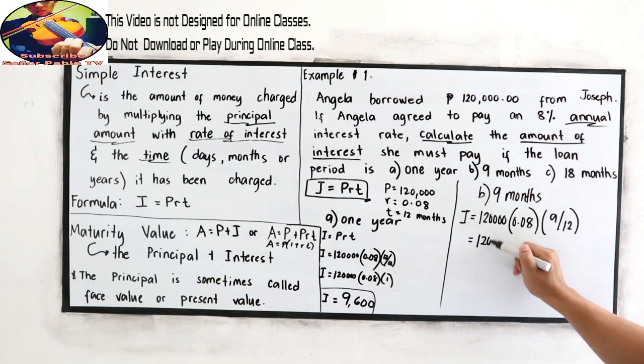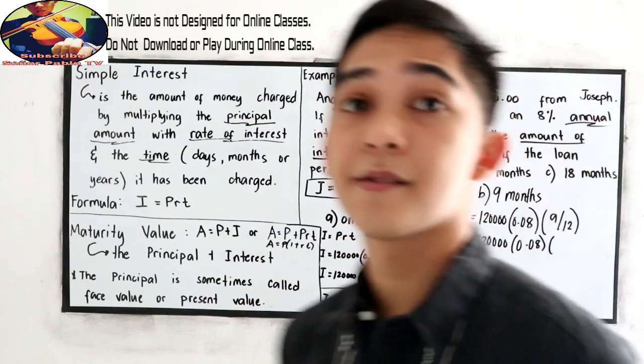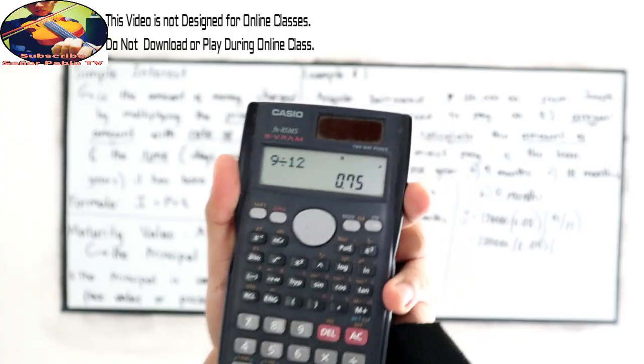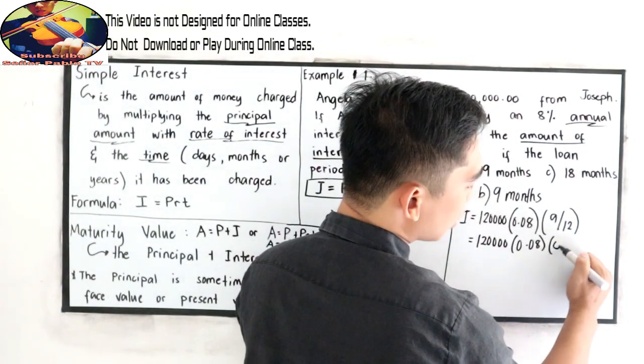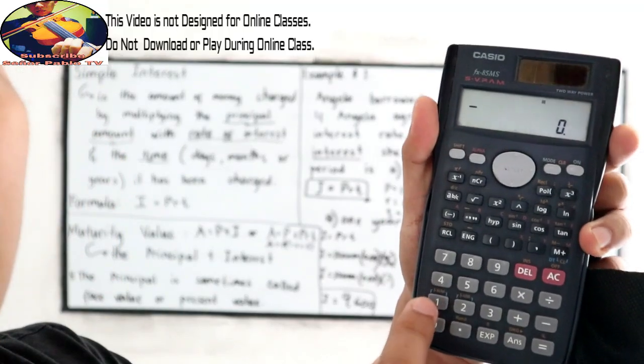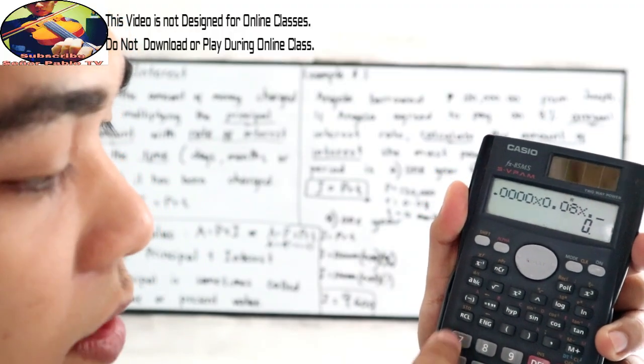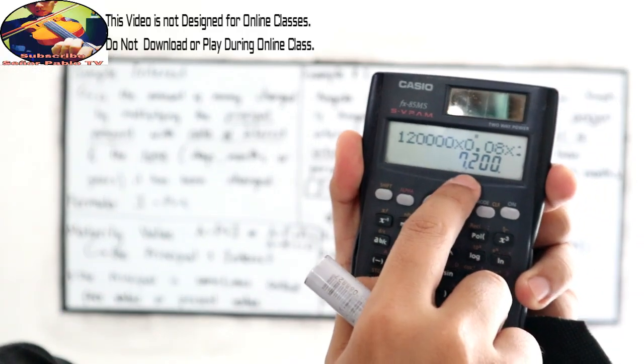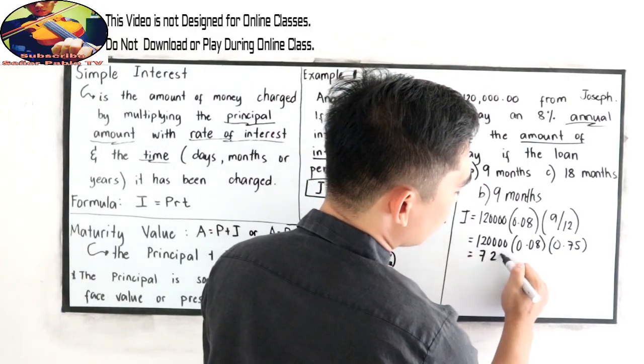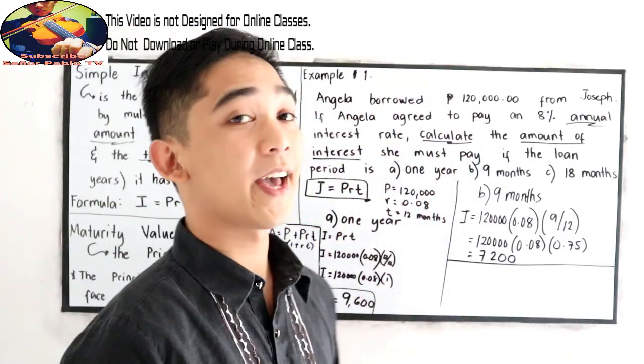So 120,000 times 0.08. So 9 over 12 is 9 divided by 12, 0.75. So let me change in fraction, 0.75. So multiplying. 120,000 times 0.08 times 0.75. That will give us 7,200. That will be the interest after 9 months.